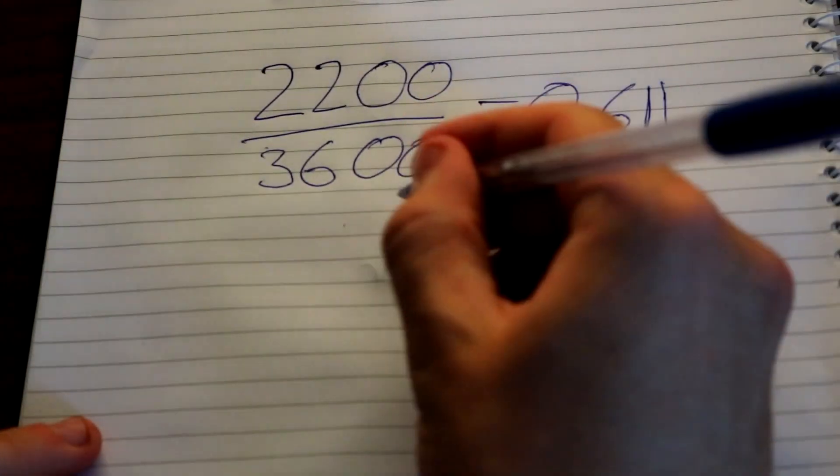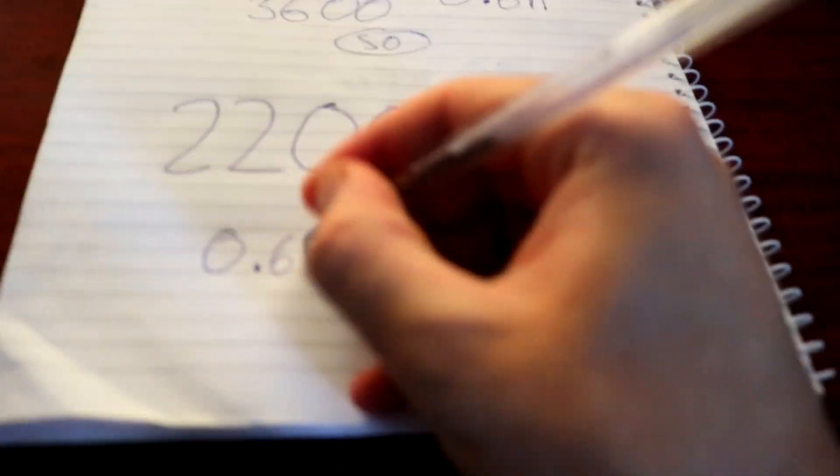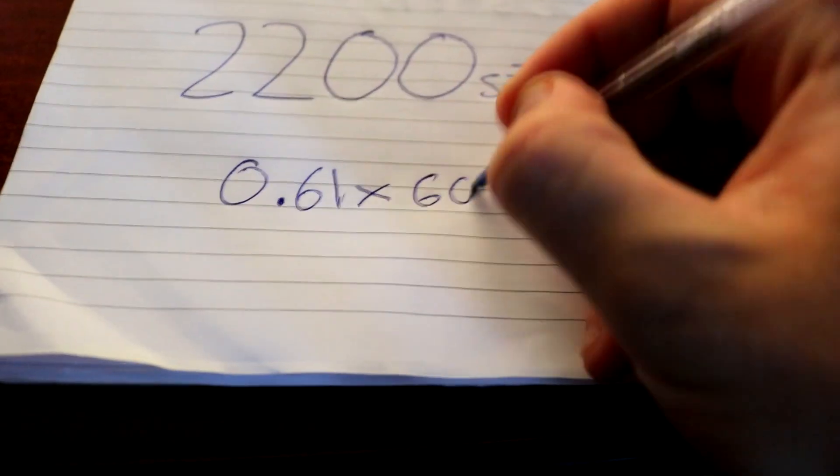To convert the decimal points to minutes, times it by 60. So I ended up getting 0.61. So we're going to go 0.61 and then we're going to times that by 60.